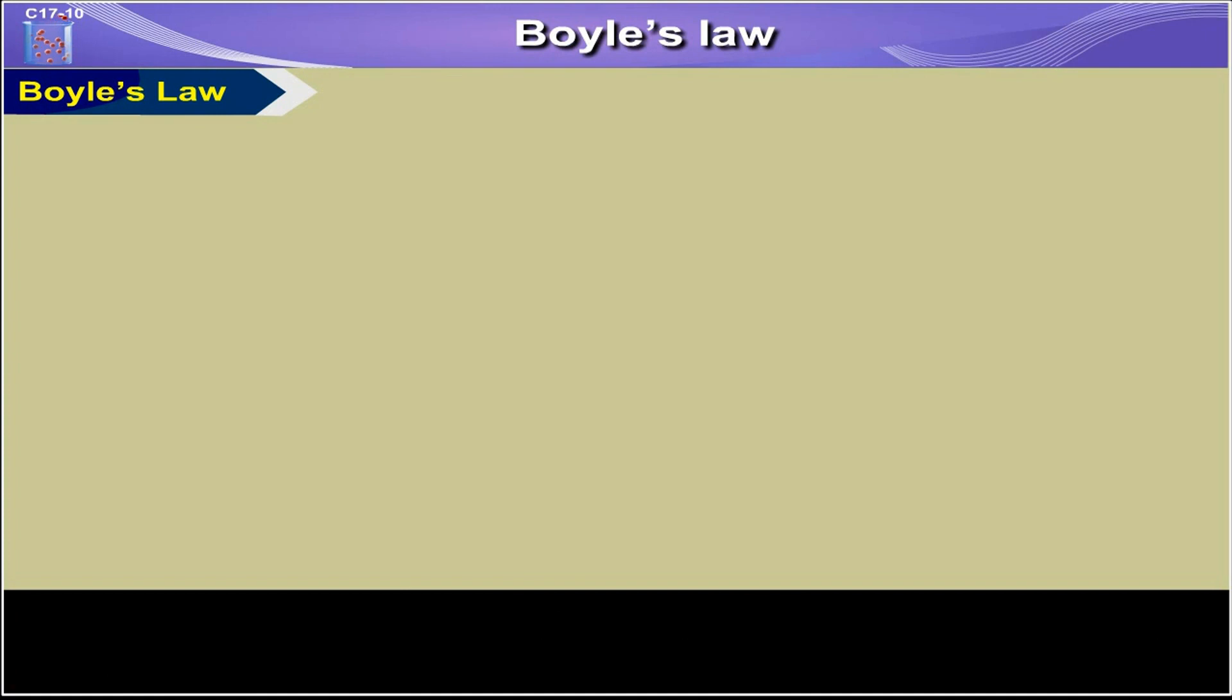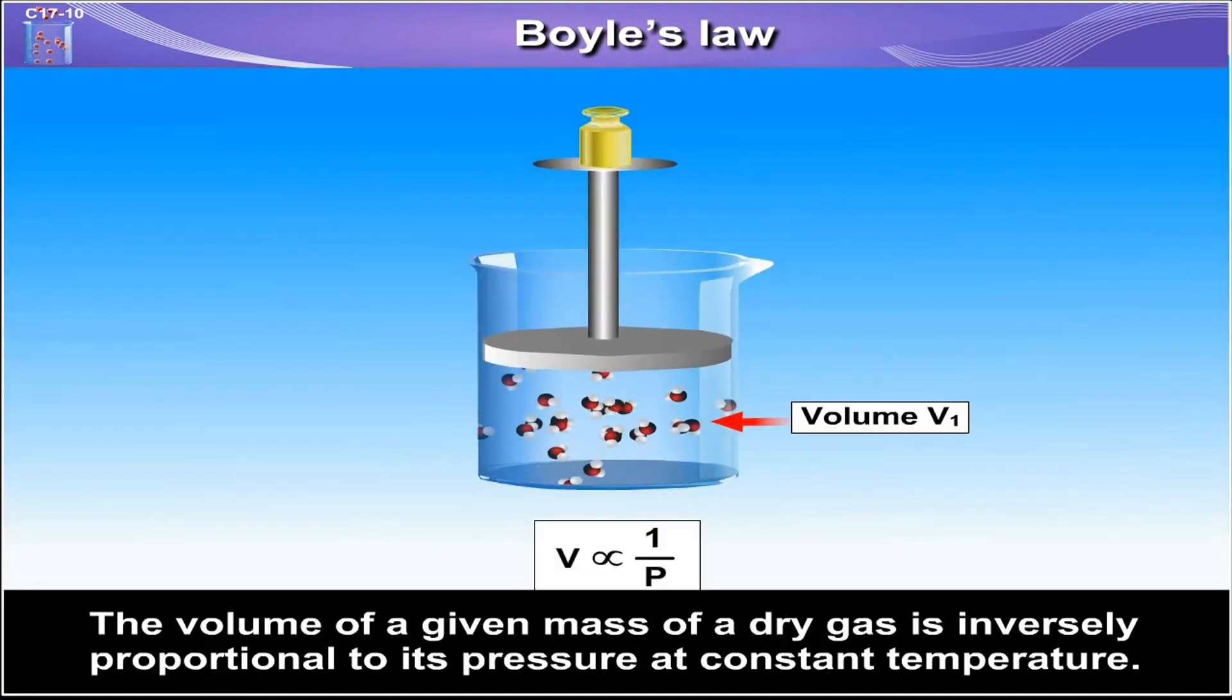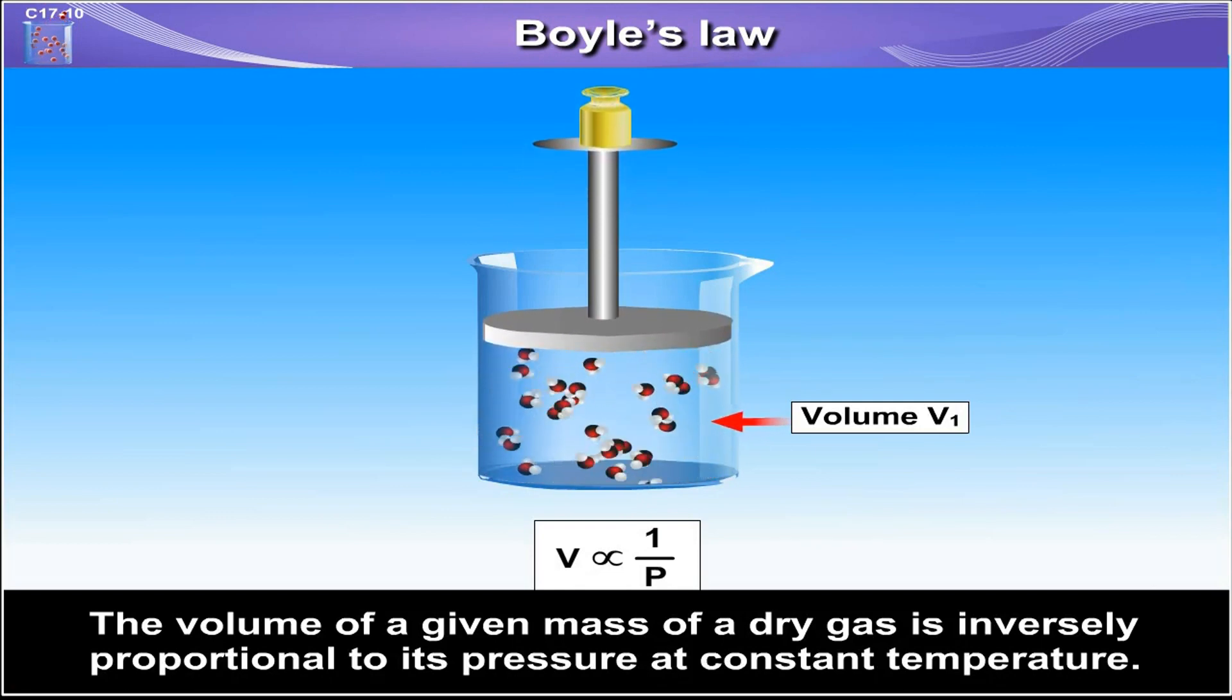Boyle's Law: The volume of a given mass of a dry gas is inversely proportional to its pressure at constant temperature.